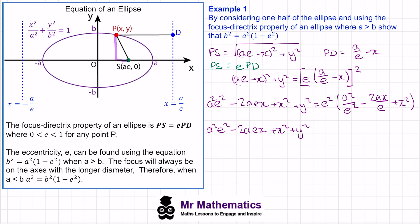Expanding the right-hand side bracket: the e squared cancels with the denominator giving a squared; the e cancels partially giving 2aex; and e squared times x squared gives e squared x squared. The negative 2aex terms cancel from both sides, leaving x squared minus e squared x squared plus y squared equals a squared minus a squared e squared.